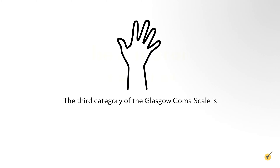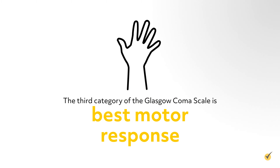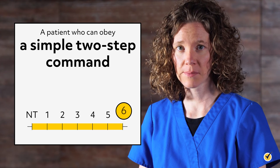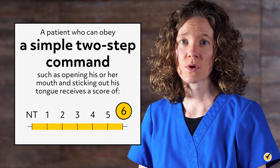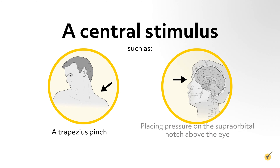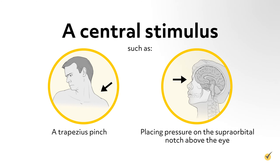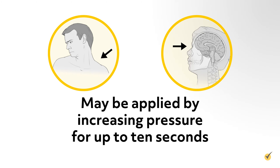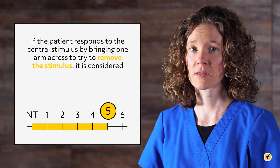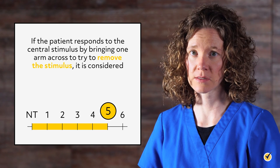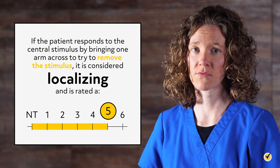The third category of the Glasgow Coma Scale is best motor response. A patient who can obey a simple two-step command, such as opening his or her mouth and sticking out his tongue, receives a score of 6 in this category. A central stimulus, such as a trapezius pinch or placing pressure on the supraorbital notch above the eye, may be applied by increasing pressure for up to 10 seconds if a patient cannot follow verbal commands. Pressure should not be applied to sites of injury. If the patient responds to the central stimulus by bringing one arm across to try to remove the stimulus, it is considered localizing and is rated a 5.